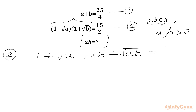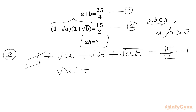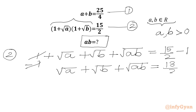The right-hand side is 15 over 2. We subtract 1 from both sides, so the 1 from the left-hand side cancels, giving us √a plus √b plus √(ab) equal to (15 minus 2) over 2, which is 13 over 2.